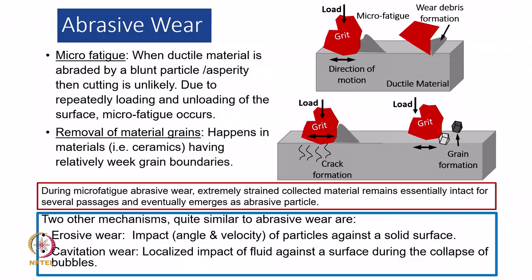We have two more subdivisions: micro fatigue and grain removal. Micro fatigue will occur in ductile materials, while grain removal will happen in brittle materials like ceramics. The reason is that in ceramic or brittle materials there will be weak grain boundaries, and because of the weak grain boundary, the whole grain comes out as wear debris.